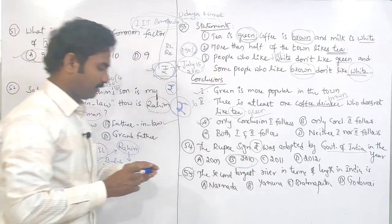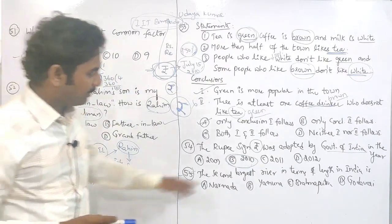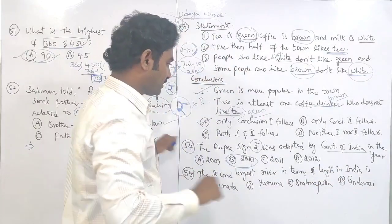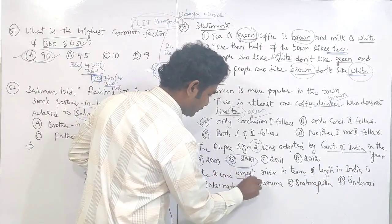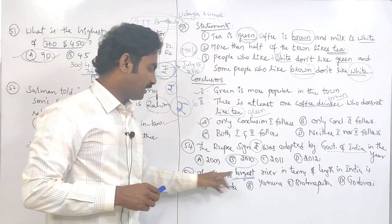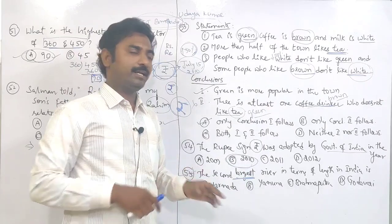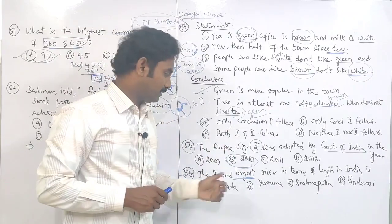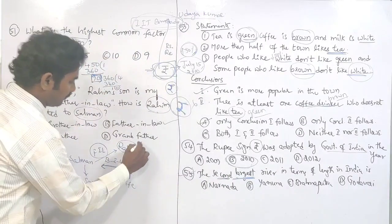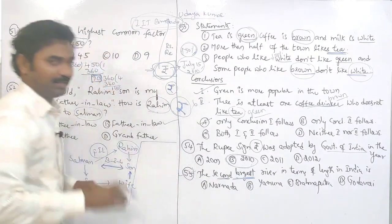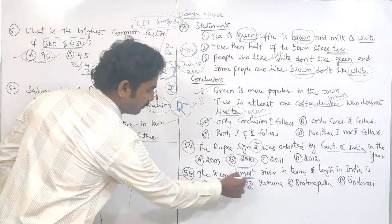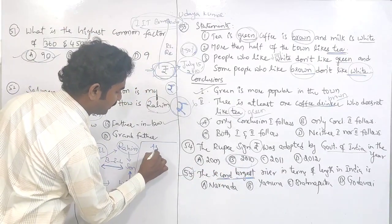Question number 55: the second largest river in terms of length in India. So what is asked here — the second largest. Largest means in area. The second largest river means area-wise which is the largest. Area-wise and length-wise, rivers are ranked differently.